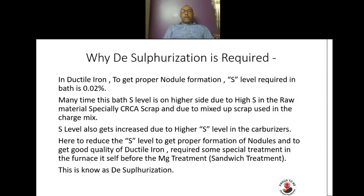Many times the bath sulfur level is on the higher side due to high sulfur in the raw material, especially CRCA scrap. Due to mixed scrap used in the charge mix, the sulfur level also increases due to higher sulfur level in the carburizer. So the carburizer is important, and because of it the sulfur level in the bath gets increased.